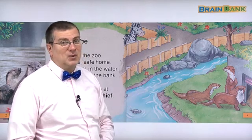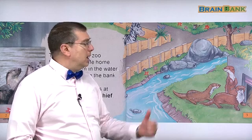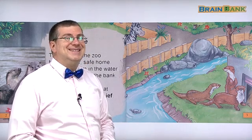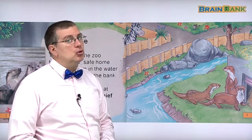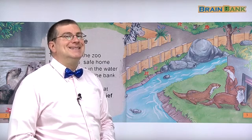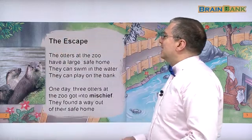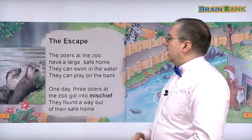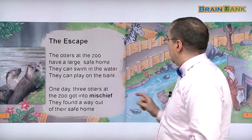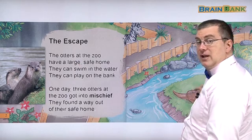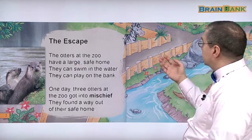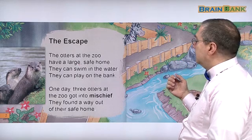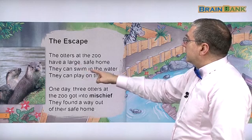Across the street is a zebra, right? What kind of place is that? This is called a zoo. When you pronounce it: zoo — not 'ju,' zoo. Okay, let's read. The otters at the zoo have a large, safe home. We can see it — it's large and safe. It has water for them. It's safe because dangerous animals or other things can't come inside. They can swim in the water.